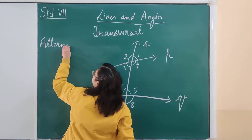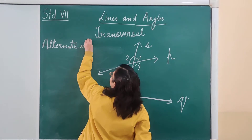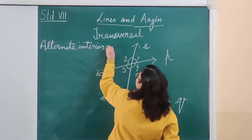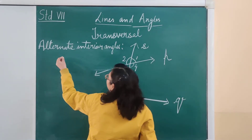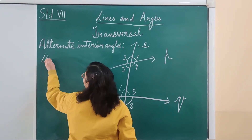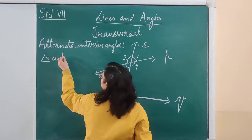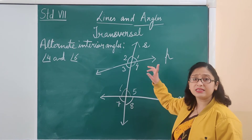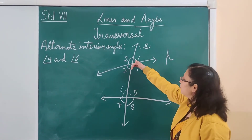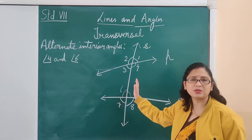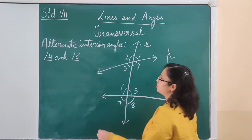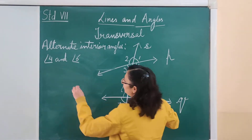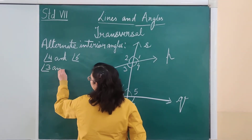The alternate interior angles are angle 4 and angle 6, where angle 4 is on the right side and angle 6 is on the left side of the transversal. Similarly, angle 3 and angle 5 are also alternate interior angles.